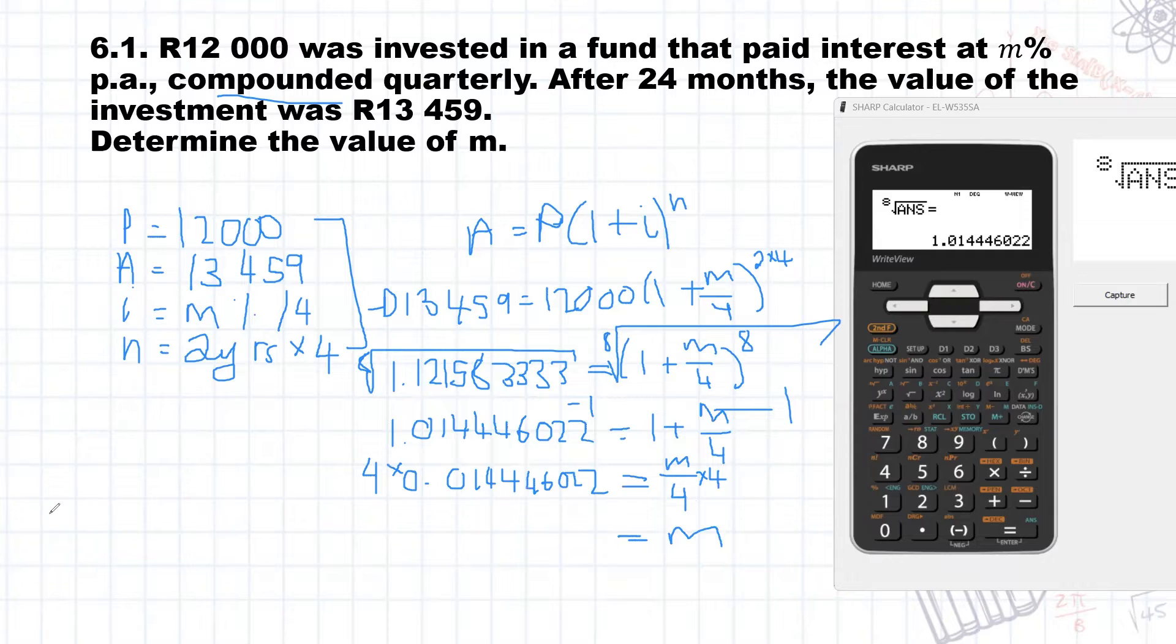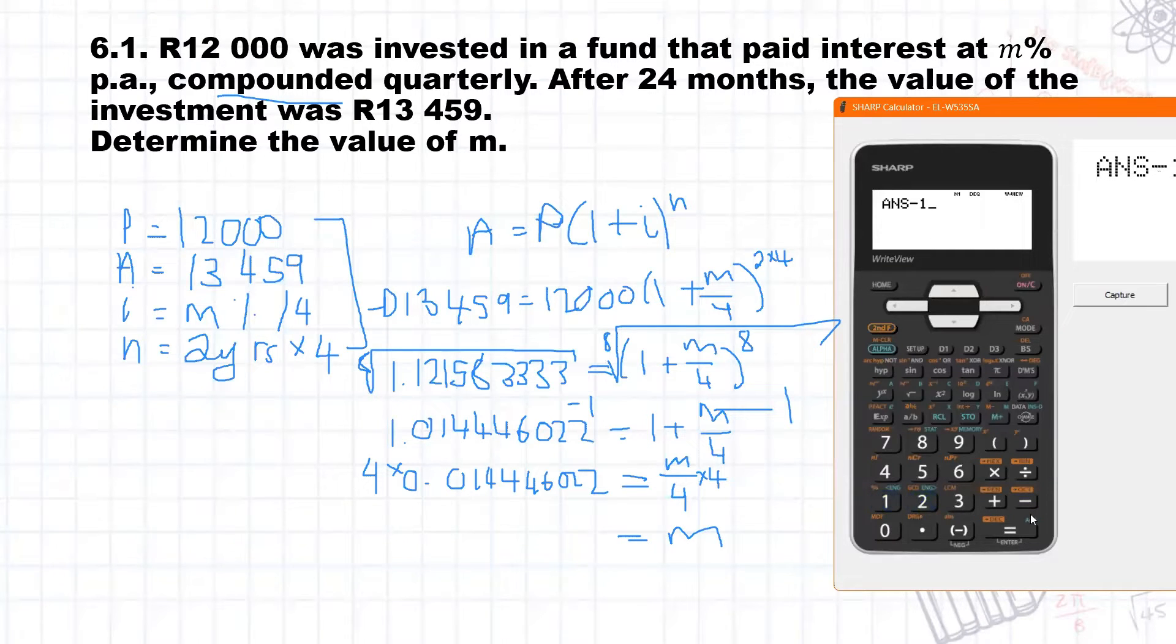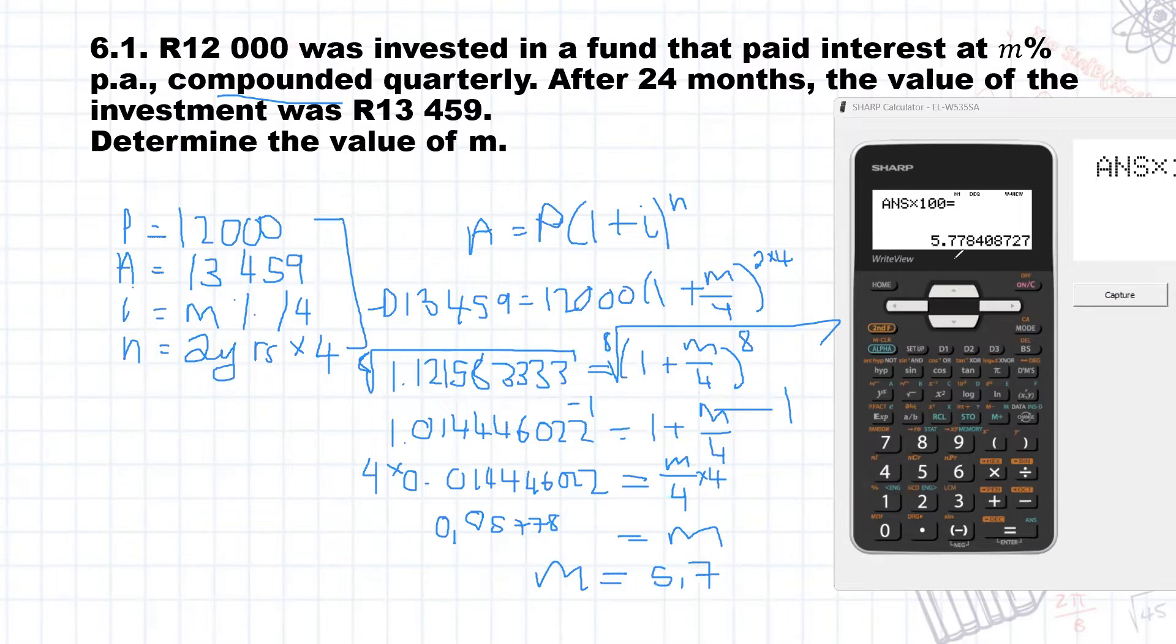And that will just plug into the calculator again. So I'm just going to subtract one and then I'm going to multiply it by four. And so our final answer is 0.05778. And now because I want it as a percentage, I'm going to multiply by 100. So M is actually 5.78%. Remember, we always work to two decimal places in our final answer. There we go. So that's the first question.